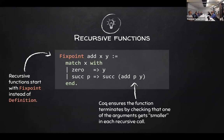Coq obviously can't solve the halting problem, so it doesn't know for certain in every case whether a function halts or not on every input. It uses a simple syntactic check. In some cases you'll have a function which definitely terminates but Coq doesn't know it, and in that case you'll have to provide a proof of termination. But for things like this, Coq just figures it out. This is also called primitive recursion.